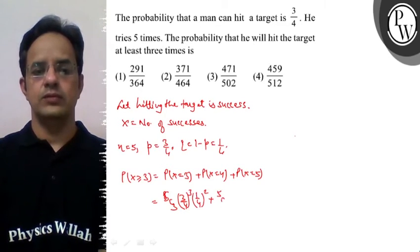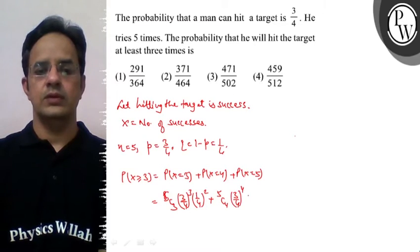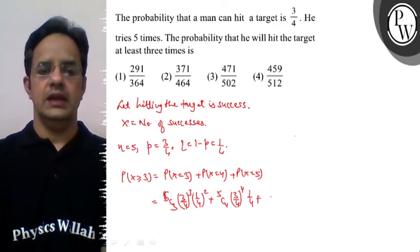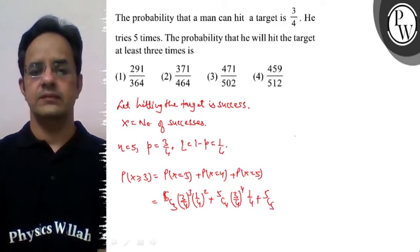Then we have 5C4, (3/4)⁴ and 1/4. And then we have 5C5 and (3/4)⁵.